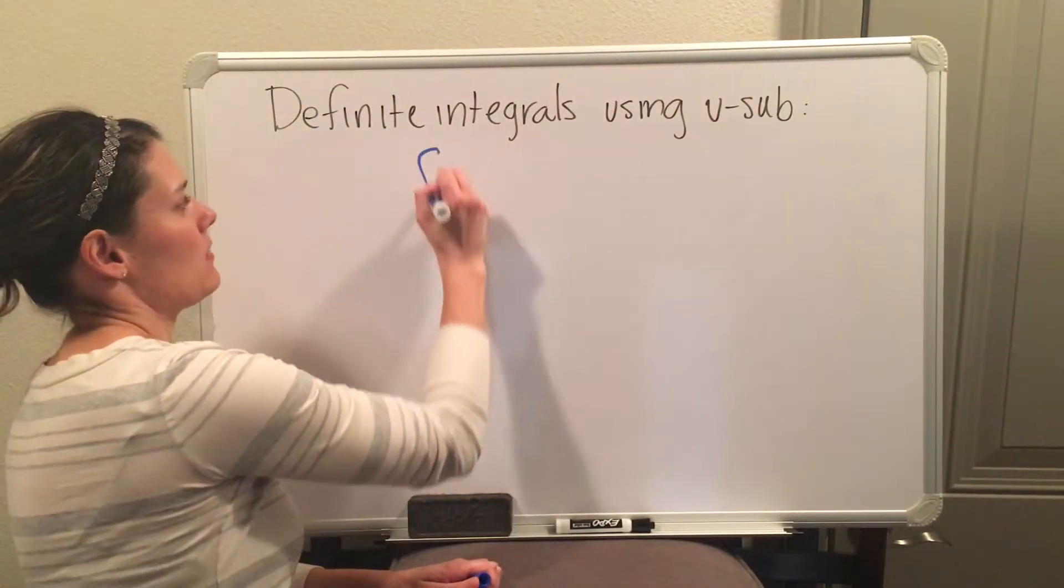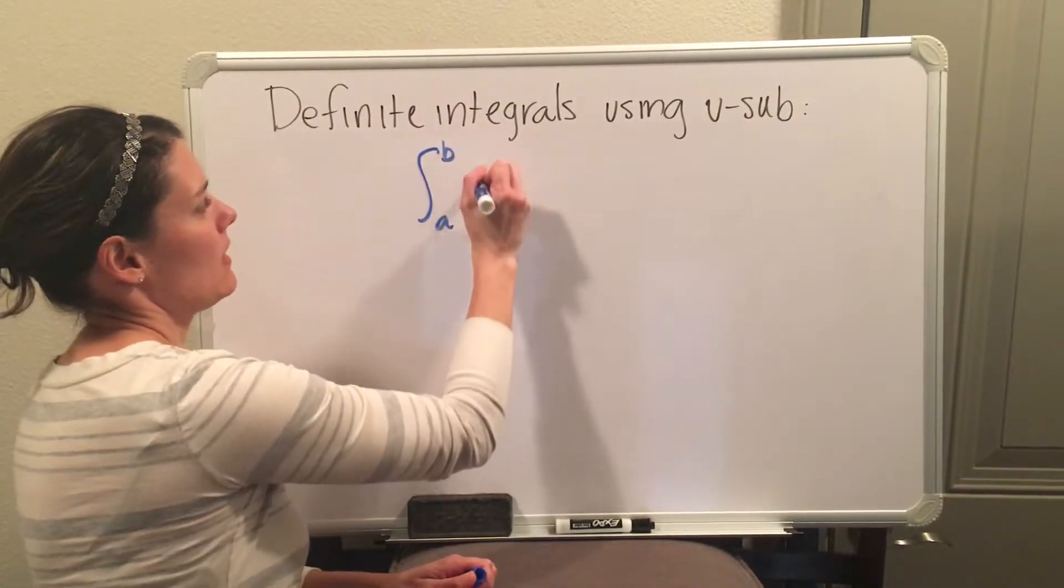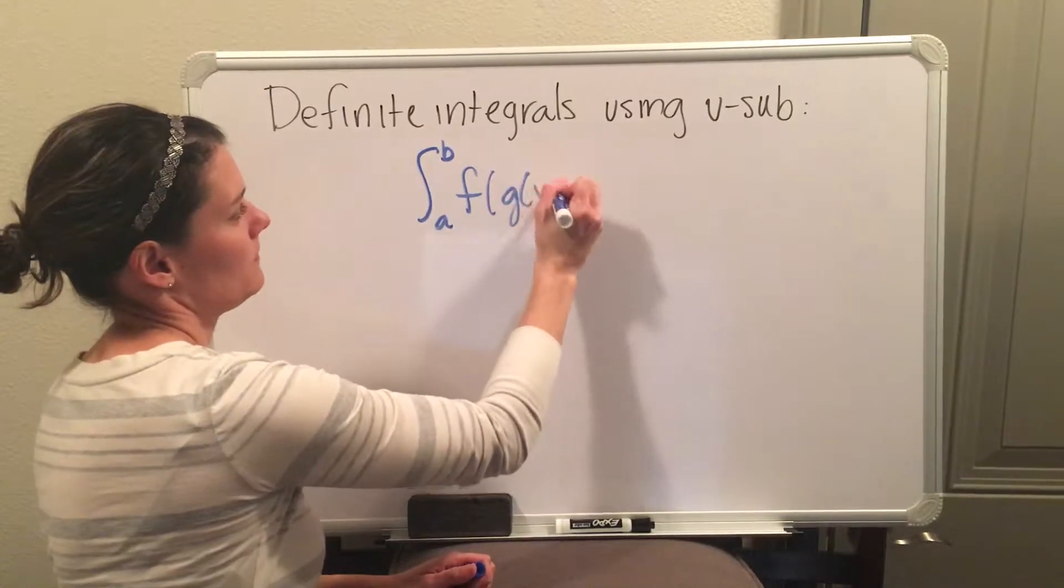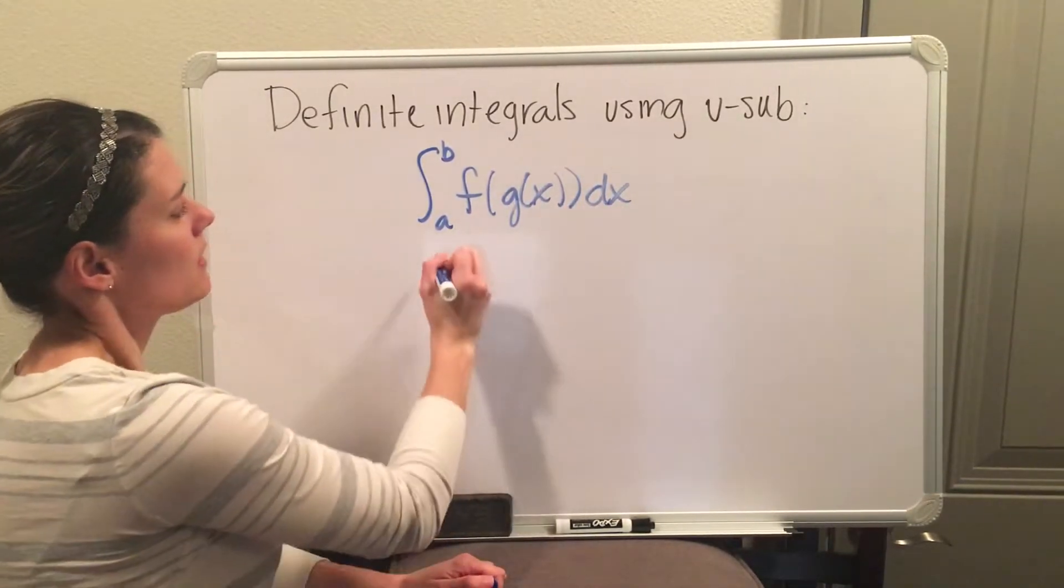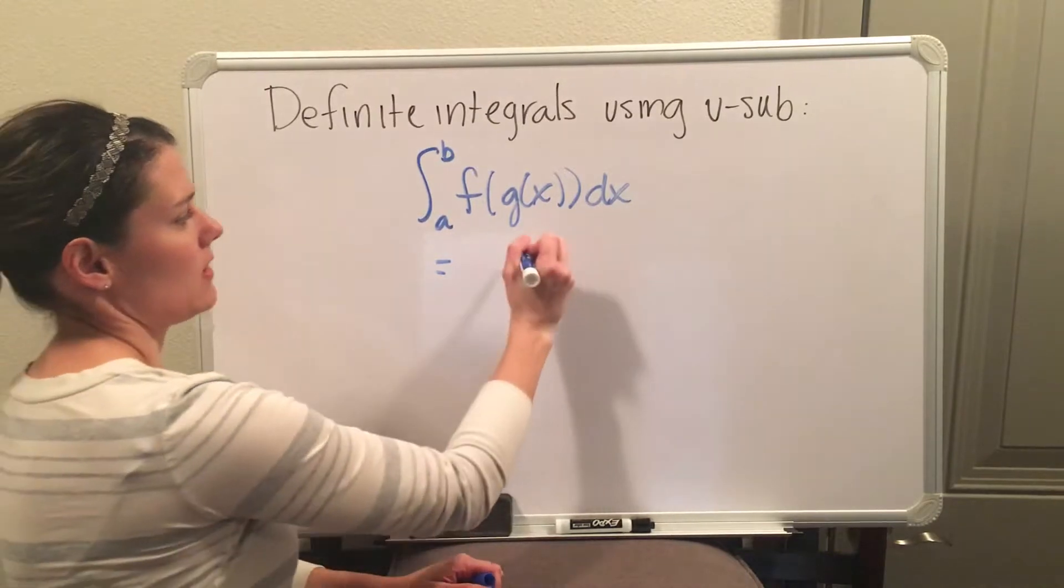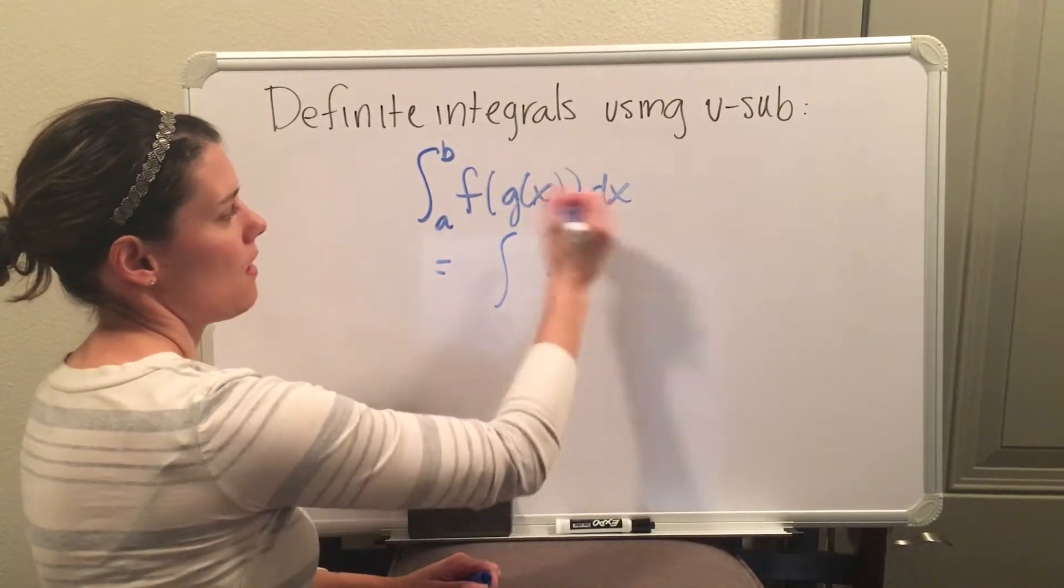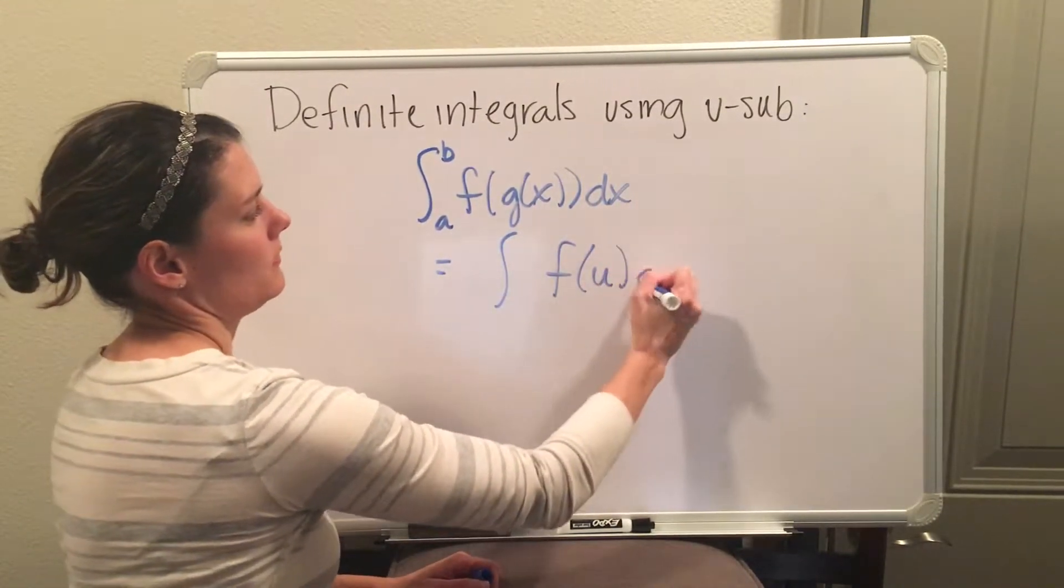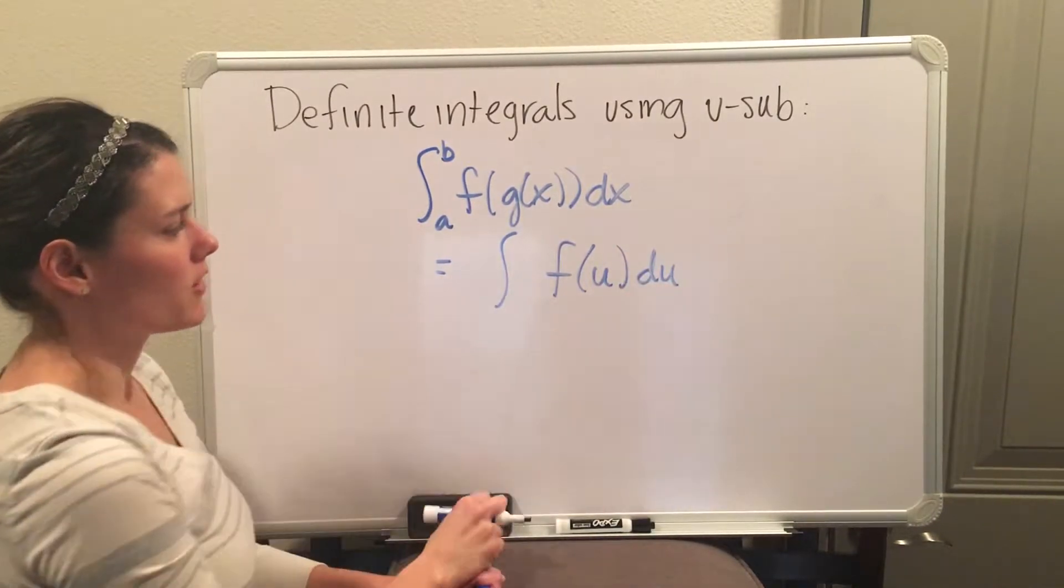If I have a definite integral from a to b of a composite function, then when we do our u-substitution and change all of my x's to u's, we end up with this function right here.